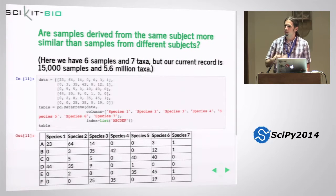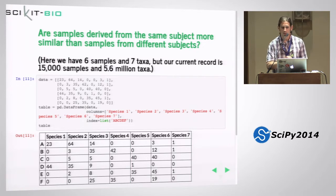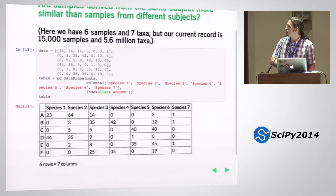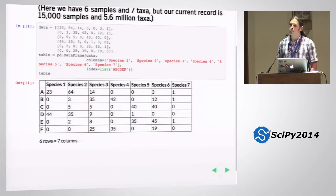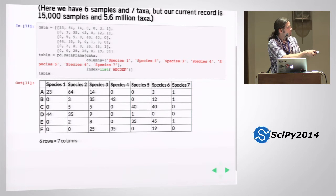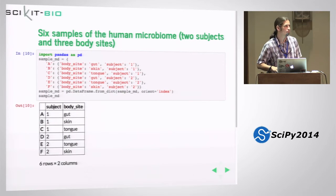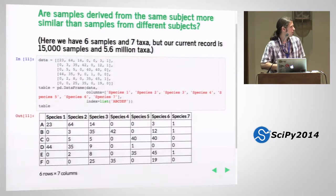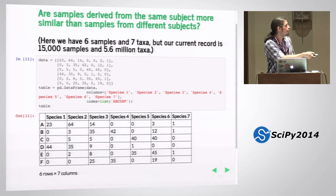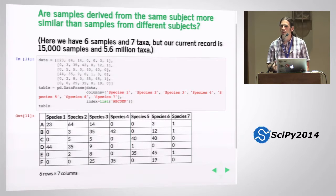The question I want to answer is: are samples derived from the same subject more similar to each other than samples derived from different humans? We have samples A through F, all stored in a pandas DataFrame. For each sample we have a taxonomic profile — for example, bacterial species one has a count of 23 and bacterial species two has a count of 64 in sample A. What we want to do is compare these taxonomic profiles and figure out if the ones from the same subjects are more similar to each other.